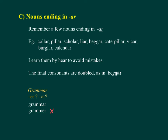C. Nouns ending in AR. Remember a few nouns ending in AR. For example: Pillar, Scholar, Liar, Burglar, Calendar, Caterpillar, Vicar. Learn them by heart to avoid mistakes. The final consonants are doubled, as in Beggar.